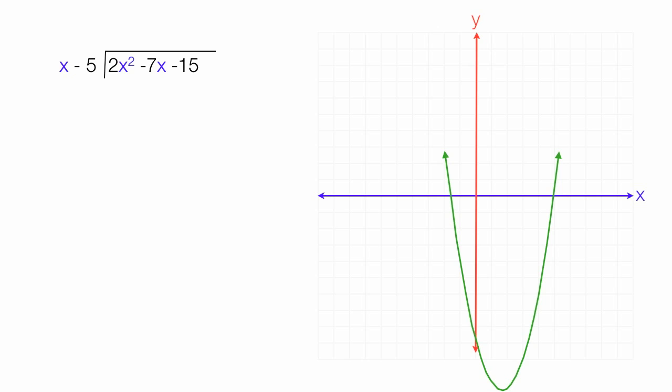That green parabola is actually the equation for 2x squared minus 7x minus 15. When you factor a parabola, what you're trying to determine is where it crosses the x-axis, and those are the two points. We know one of the points, which is x minus 5, but we don't know the other one, which is denoted by a question mark.